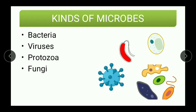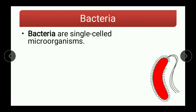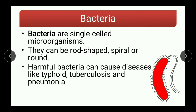First in the list is bacteria. Bacteria are single-celled microorganisms. As you can see, they can be rod-shaped, spiral, or round in shape. Harmful bacteria can cause diseases like typhoid, tuberculosis, and pneumonia.